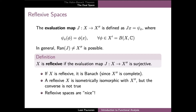The second dual and the evaluation map are especially important in defining the property called reflexivity of a normed space. The range of the evaluation map J is always a subspace of the second dual, but in general it need not cover the whole second dual. However, there is an important class of normed spaces for which the range of J is exactly the second dual — these are called reflexive spaces. Since the evaluation map is isometric and the second dual is a Banach space, all reflexive spaces are by definition complete.